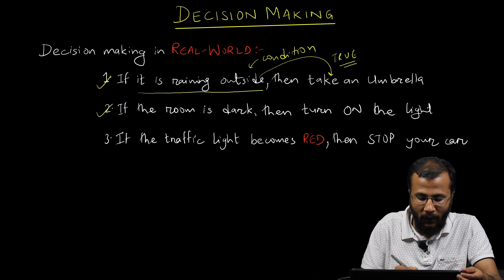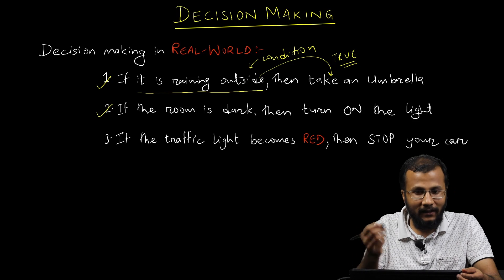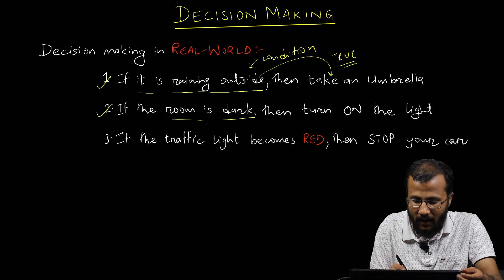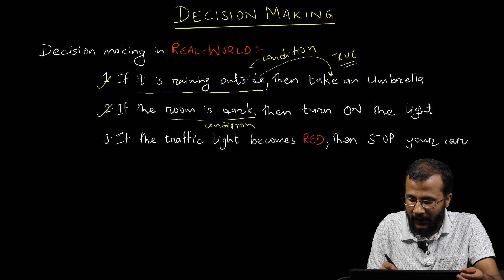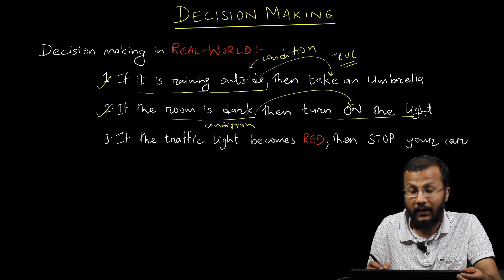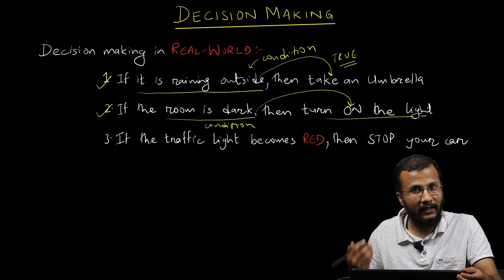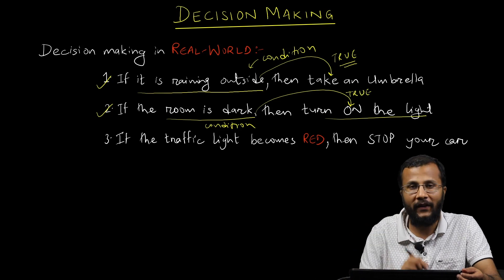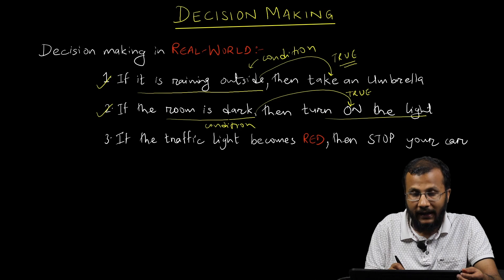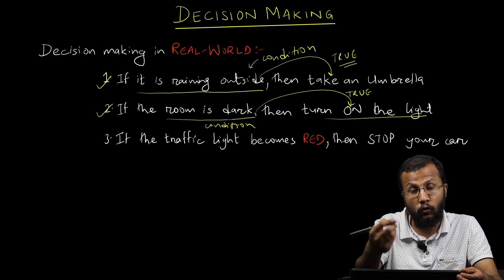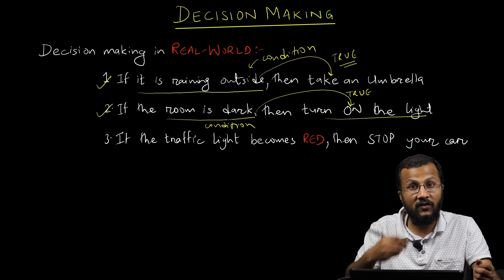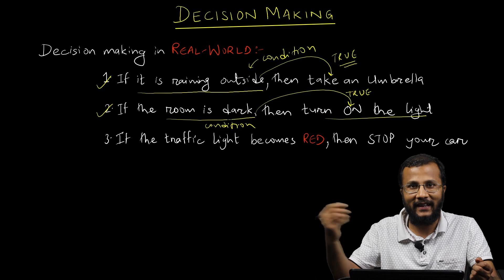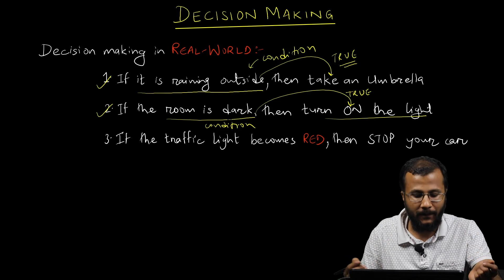The second example: if the room is dark — that is the condition — then you turn on the light. If the condition 'room is dark' is true, you turn on the light. If it is false, you do something else. This is how decision-making works.